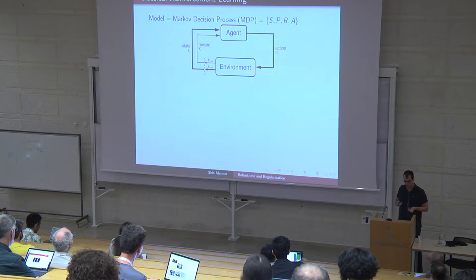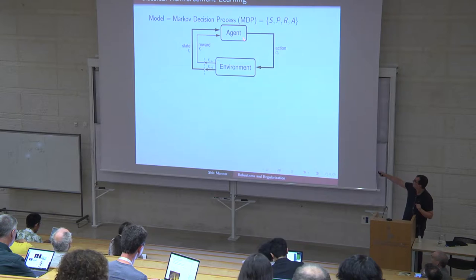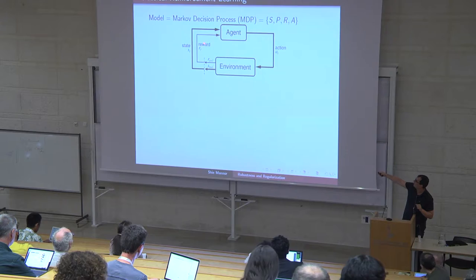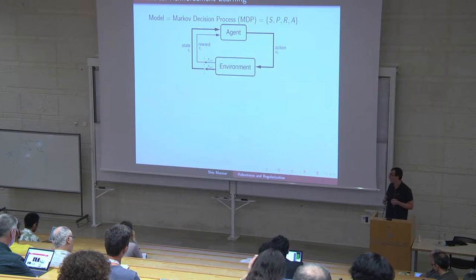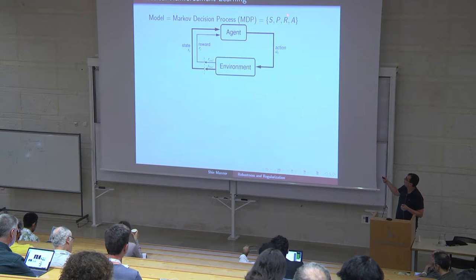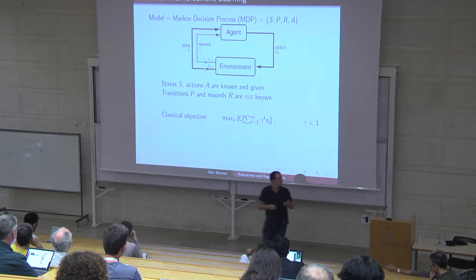This is a slide you've seen before. We have an agent, we have an environment, and actions. The agent sees the current state of the system, obtains a reward, uses an action, something stochastic happens to the environment, and as a result a reward is given and the state changes. In this classical model, you know the state space and what actions are available, but you don't know the transition probabilities and the rewards, at least not initially.